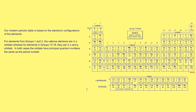For elements in groups 1 and 2 — these two groups — the valence electrons, that's the outer electrons, are going to go into the s orbitals. Whereas groups 13 to 18, that's the p block, the valence electrons are going into the p orbitals.